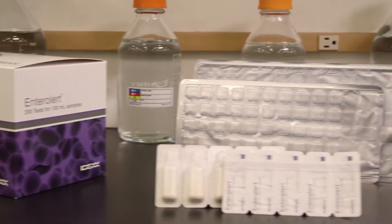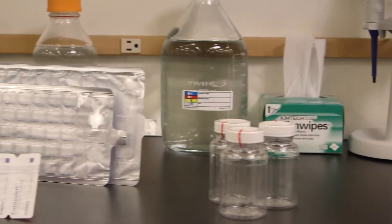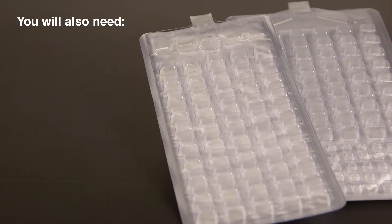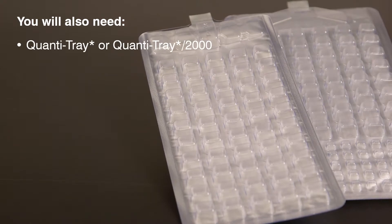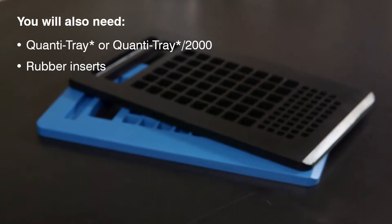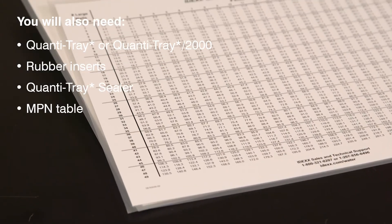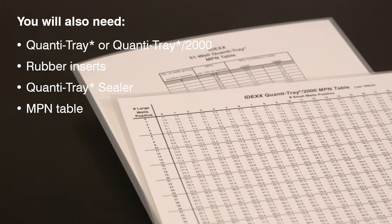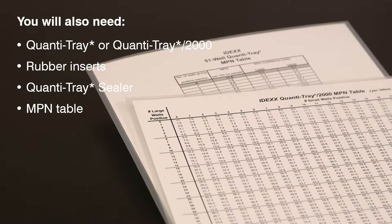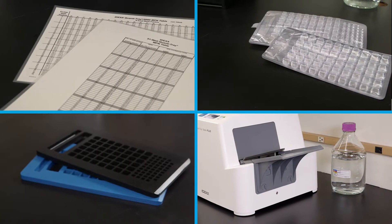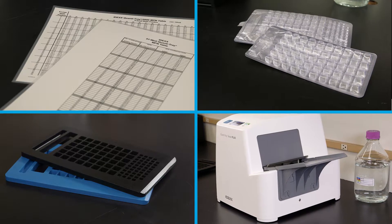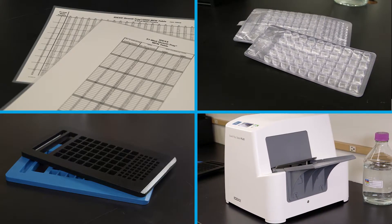In addition to the materials used for presence-absence detection, for quantification you will need a Quantitray or Quantitray 2000, Quantitray rubber inserts, a Quantitray sealer, and the included most probable number table or the IDEXX automated MPN generator program found at IDEXX.com. All of these items are included in the Quantitray system and are available from IDEXX.